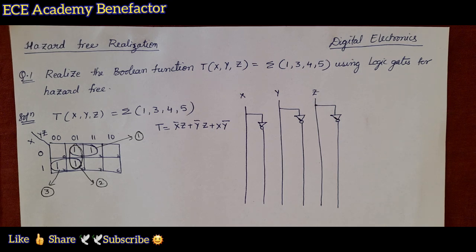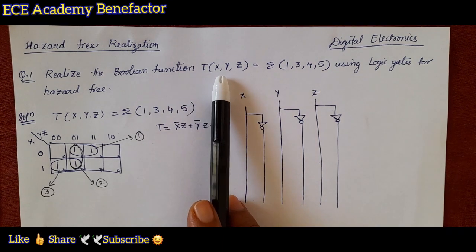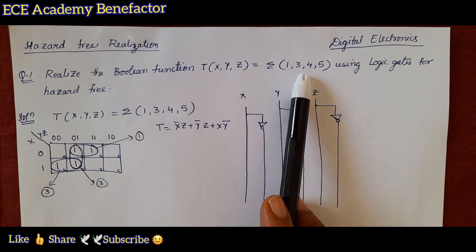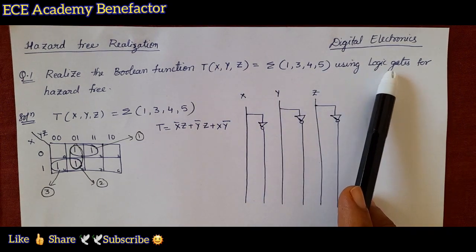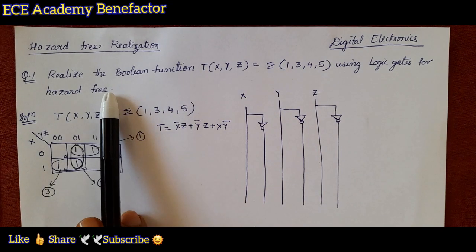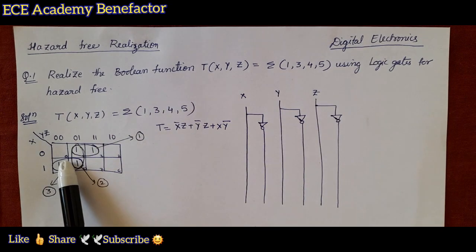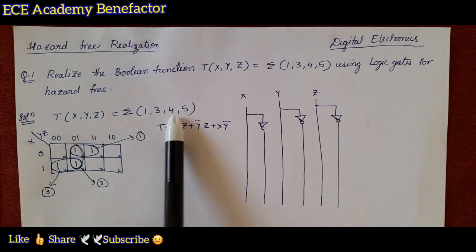Let us start the first problem: realize the Boolean function f(x,y,z) = Σ(1, 3, 4, 5) using logic gates for hazard-free realization. It is a three-variable K-map, so first draw the three-variable K-map for the given function.